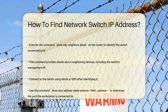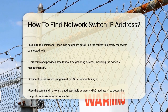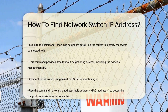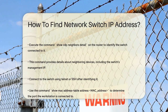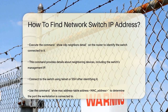Next, use the 'show CDP neighbors detail' command on the router to find out which switch is directly connected to the router. This command will give you details about the neighboring devices, including the switch's management IP address. Now, connect to the switch using Telnet or SSH, and use the 'show mac address-table address [MAC address]' command to find out which port the workstation is connected to, replacing MAC address with the MAC address you found earlier.